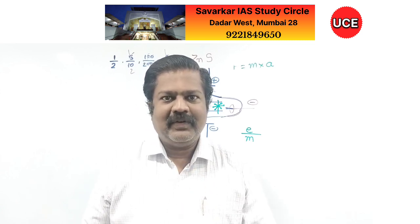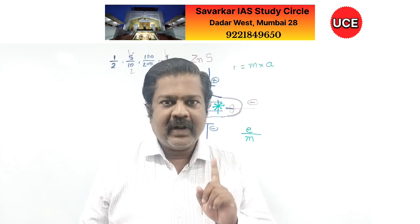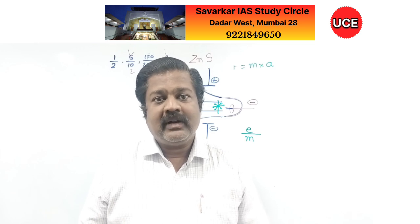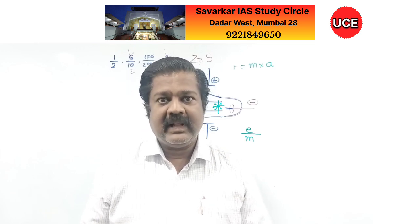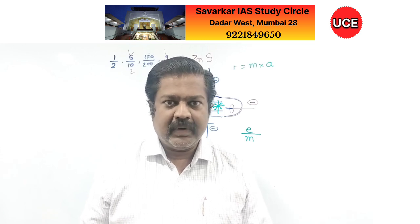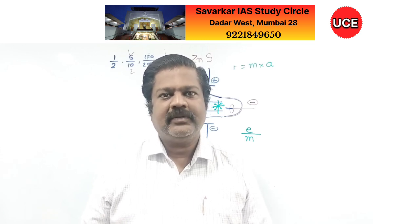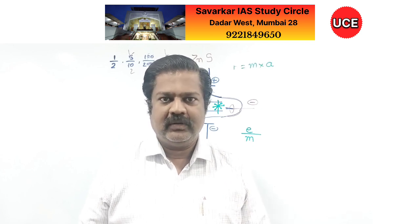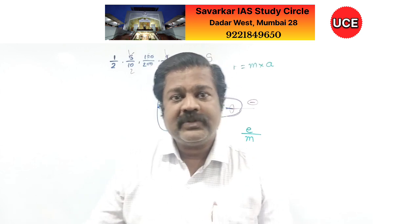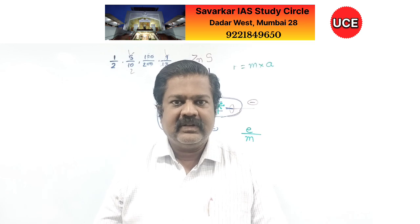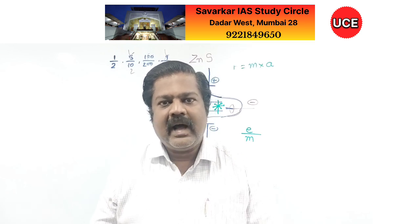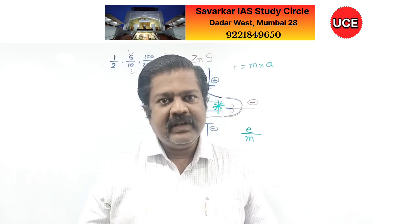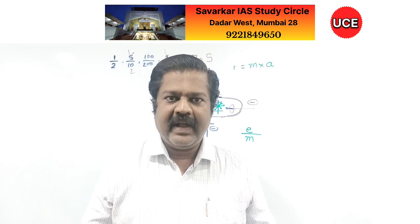Till this point, we were not even sure atoms existed. But now sub-atomic particles have been discovered — electrons. However, electrons are negatively charged, and the atom is electrically neutral. So Sir J.J. Thomson said that in order to balance this, there must be an equal and opposite positive charge present in the atom, and this way he was able to explain the neutrality of the atom.